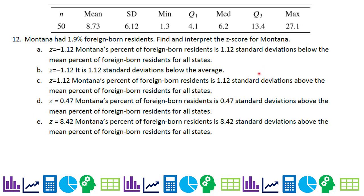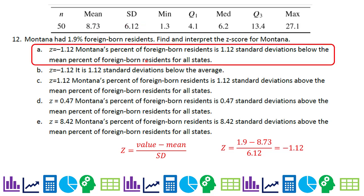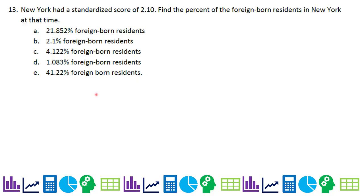Montana had 1.9% foreign-born residents. The Z-score is (value − mean) / standard deviation = (1.9 − 8.73) / standard deviation, giving negative 1.12. Why isn't just stating the number the correct answer? Because you must find and interpret the Z-score for Montana — there must be context. Numbers alone are not sufficient; you must include information about Montana specifically.